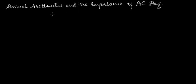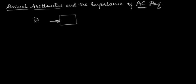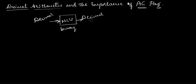In this video we'll talk about decimal arithmetic and the importance of the auxiliary carry flag. In decimal arithmetic, we feed decimal numbers to the microcontroller instead of hexadecimal numbers. As usual, the microcontroller does its internal operations in binary and outputs a decimal result instead of a hexadecimal result. However, we cannot feed decimal numbers directly — we feed them through the concept of BCD numbers.